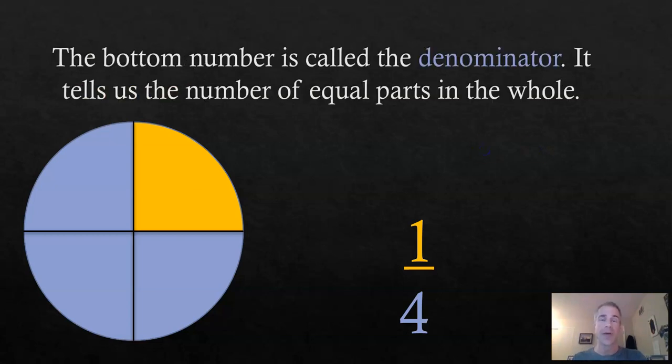Now, the bottom number is called the denominator, okay? So, that tells us the total number of equal parts in the whole. Remember, that circle was divided up into four equal pieces. So, that number, that four, because there's four equal pieces, that goes on the bottom. That's that purple four that you see. See how the remainder of the circle is purple still? Anyway, so the total number of pieces is four. So, that's the denominator.